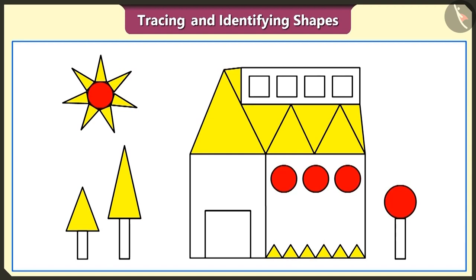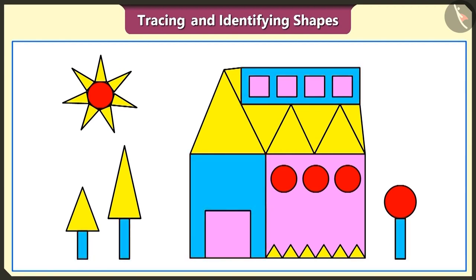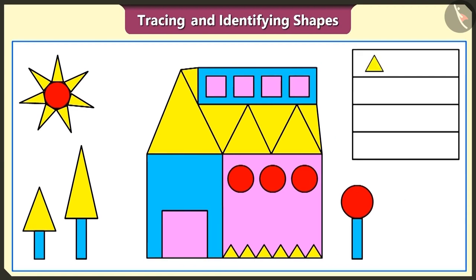Look, there are several square shapes in this figure. We will fill in the square shapes with pink color. Thumpkin, is there any shape yet to be filled with colors? The rectangle shape. You are right. Now, we will fill the rectangle shapes with sky blue color. We have filled the triangles with yellow, the circles with red, the squares with pink and the rectangles with sky blue color.